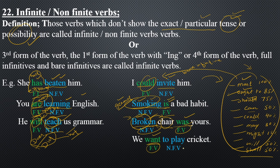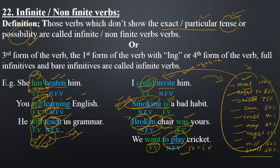'We want to play cricket' — 'want' is the finite verb, but 'to play' is a full infinitive. A full infinitive is 'to' plus the first form of the verb, working as a noun in a sentence. Here 'to play' is the non-finite verb — it is not telling you the tense but is the name of an action: we want to play cricket. Hope the lecture about infinite or non-finite verbs is clear to you all. Best of luck for the next lecture — see you next time!